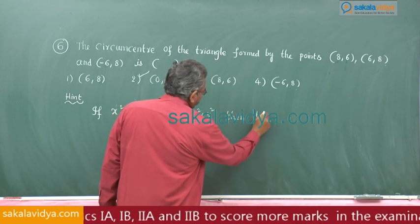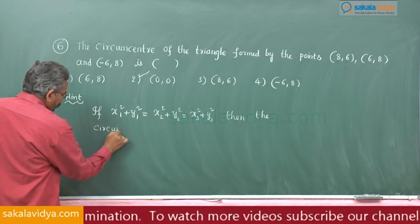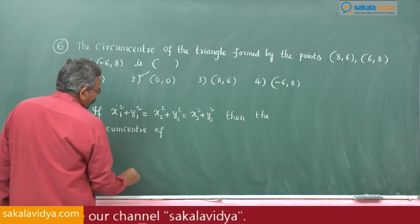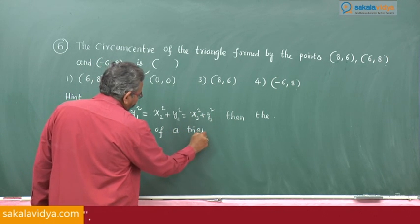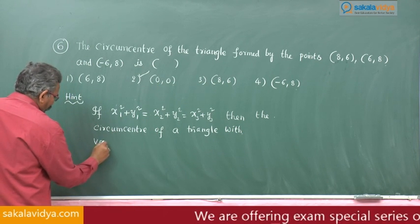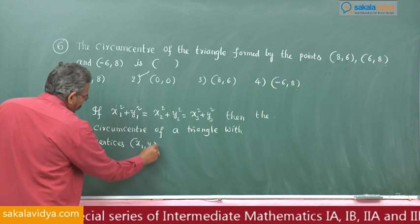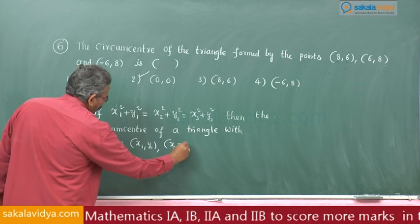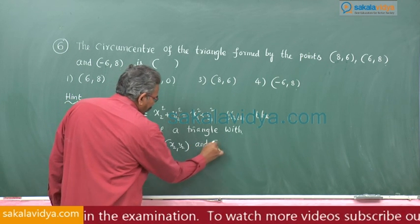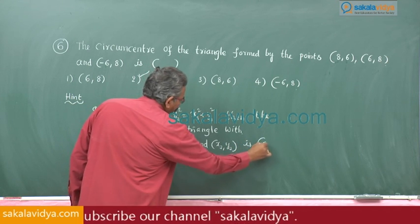the circumcentre of triangle with vertices (x₁, y₁), (x₂, y₂), and (x₃, y₃) is origin (0, 0).